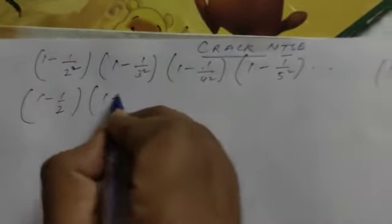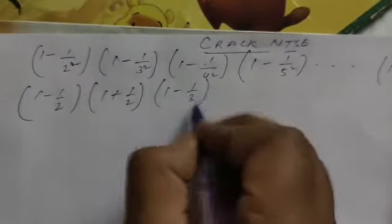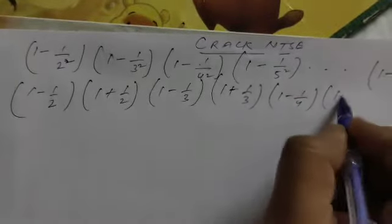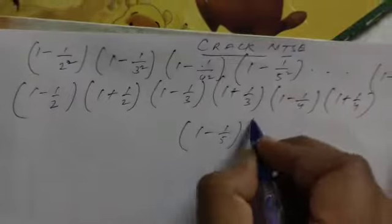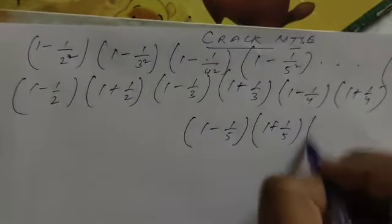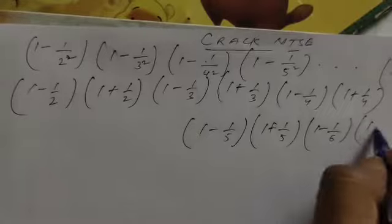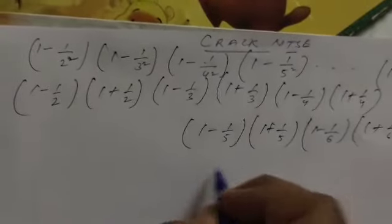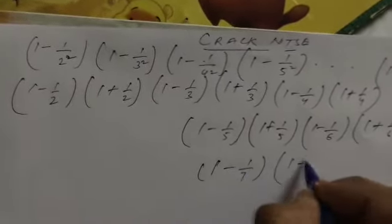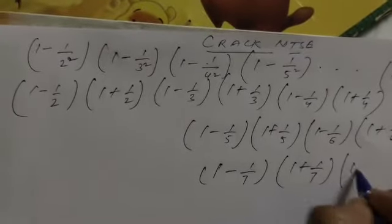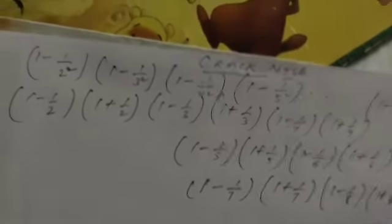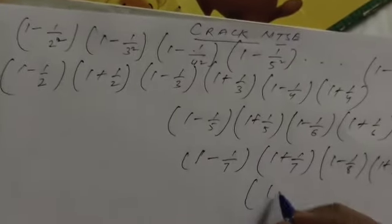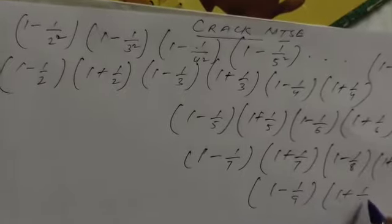First term: (1 - 1/2)(1 + 1/2) times (1 - 1/3)(1 + 1/3) times (1 - 1/4)(1 + 1/4) times (1 - 1/5)(1 + 1/5) times (1 - 1/6)(1 + 1/6) times (1 - 1/7)(1 + 1/7) times (1 - 1/8)(1 + 1/8) times (1 - 1/9)(1 + 1/9).